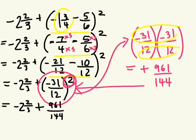Okay? So we can rewrite this expression. Still haven't done anything with negative 2 and 2 thirds plus 961 over 144. Now we're adding fractions. What's one strategy to simplify this? One way is to turn this into an improper fraction. 2 times 3? 6 plus 2? 8 over 3. And is it a negative fraction? Yes. Plus 961 over 144.